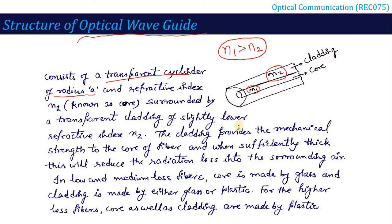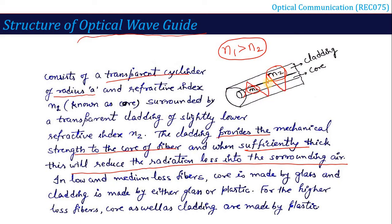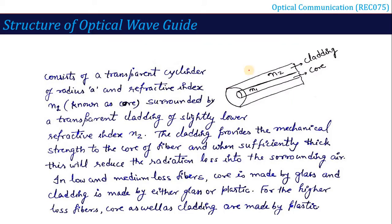The cladding provides mechanical strength to the core of the fibre, and when sufficiently thick, it reduces radiation loss into the surrounding air. When light propagates inside, it remains confined within the core due to internal reflection, minimizing losses. So to summarize, an Optical Waveguide consists of a core and a surrounding cladding with refractive indices N1 and N2 respectively.